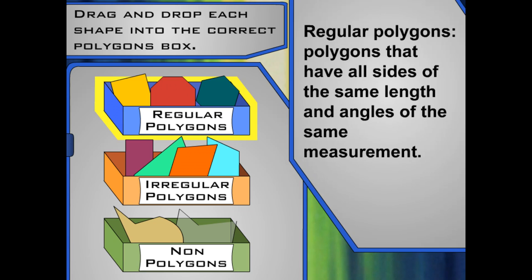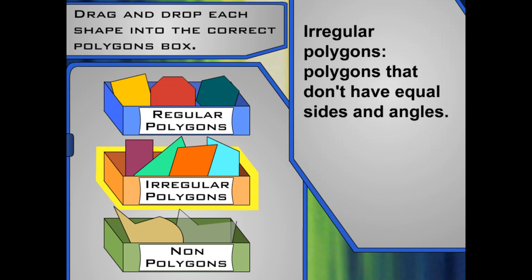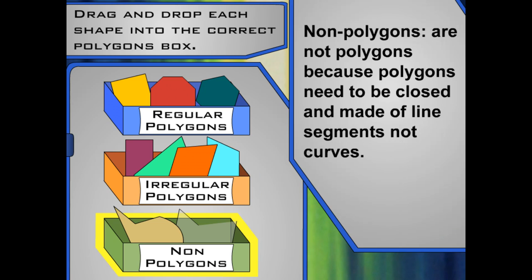Regular polygons are polygons where all sides are the same length and the angles have the same measurement. With irregular polygons, the sides and angles aren't all equal. Non-polygons aren't polygons because polygons need to be closed and be made only out of line segments, not curves.